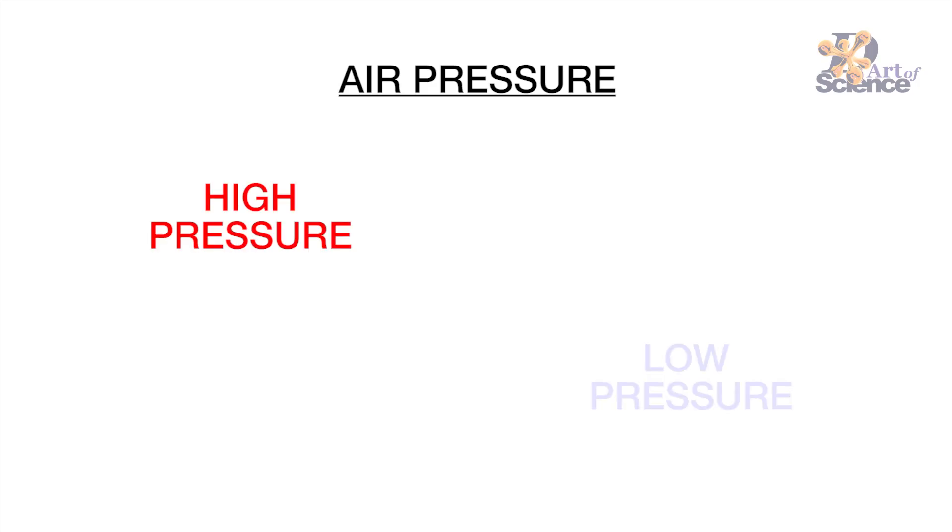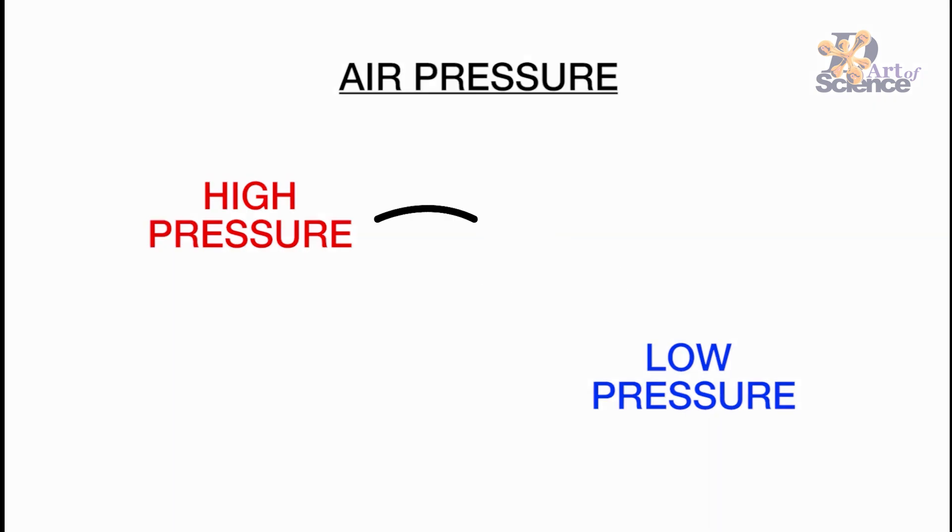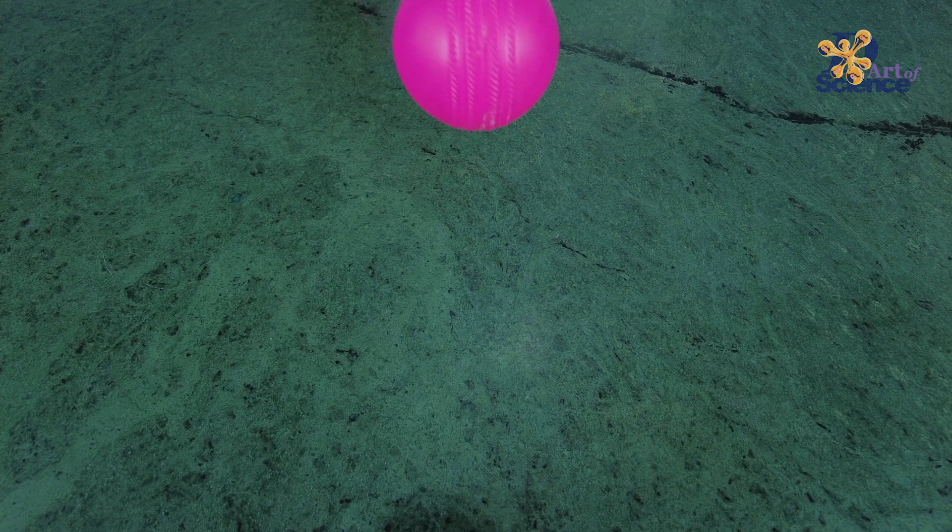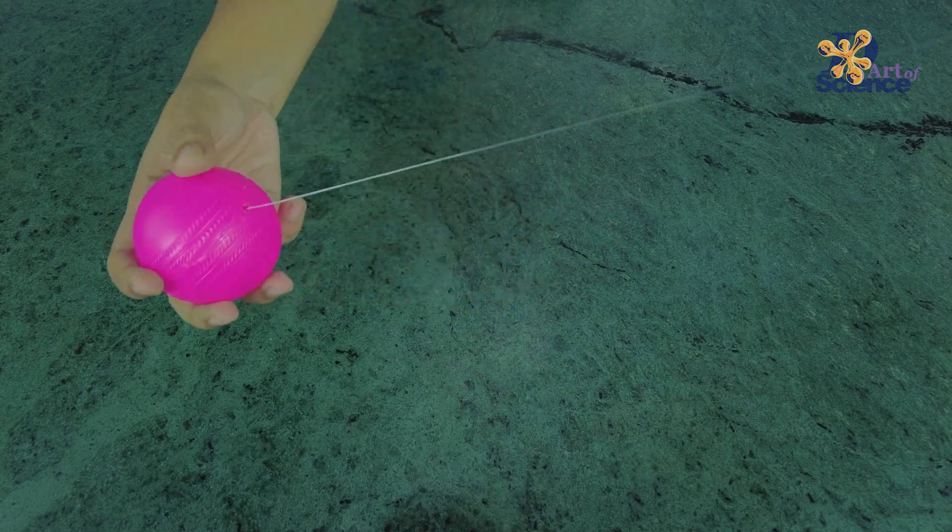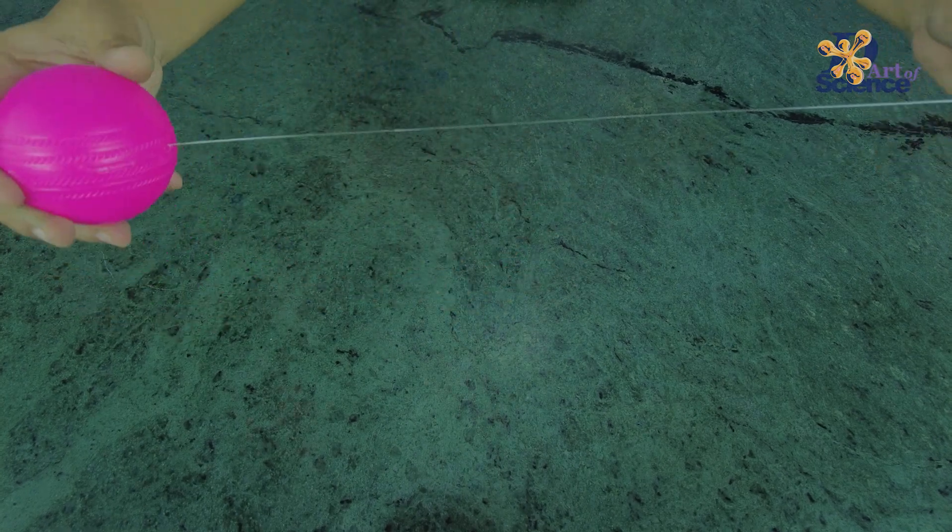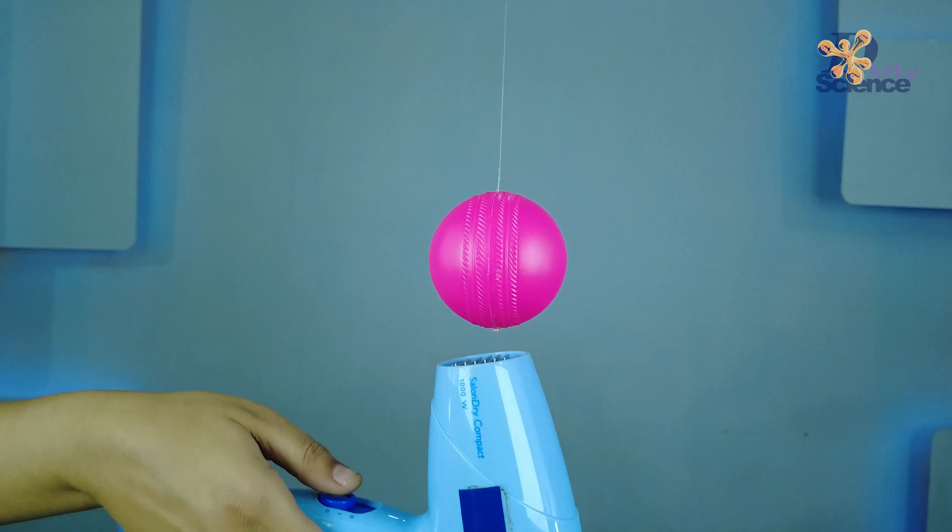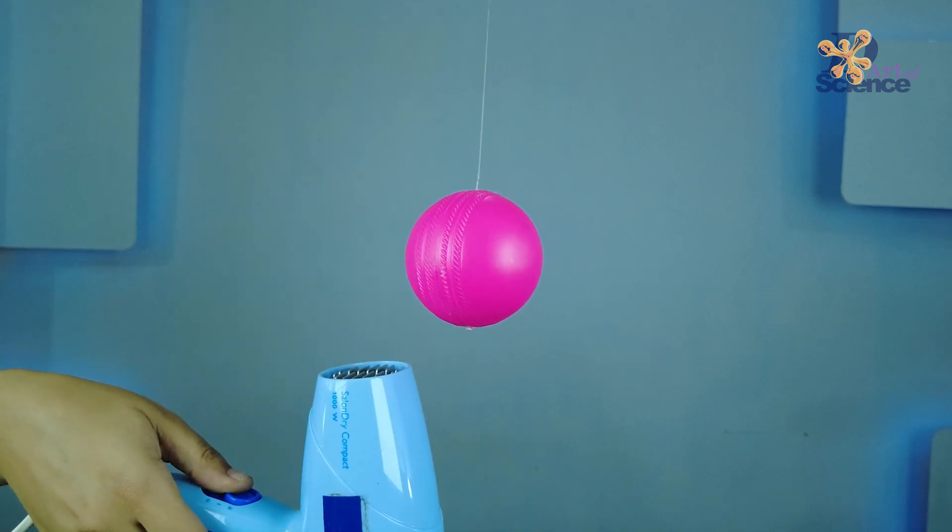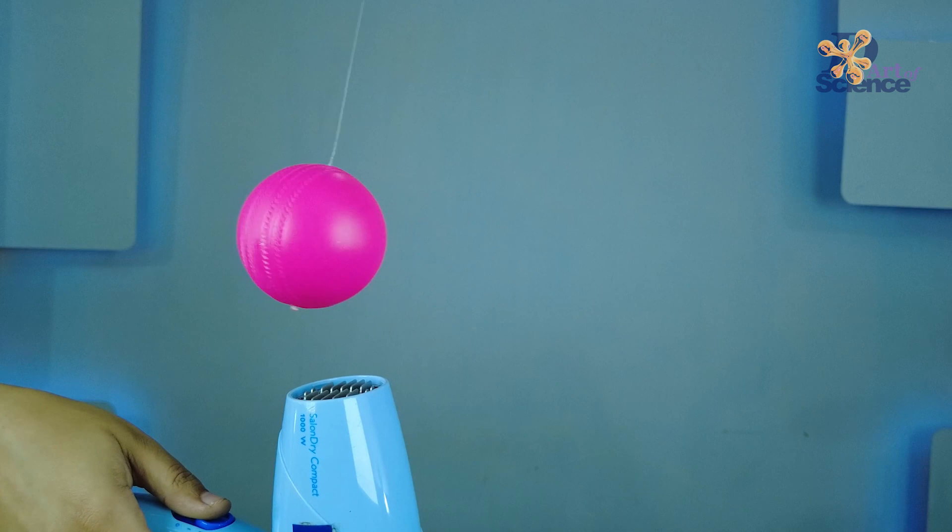Well, here's where air pressure comes into play. Air always travels from high pressure areas to low pressure areas. Here's a way to show that. Simply tie a thread to a ball and let it suspend from a height. Now take the hair dryer and blow air not under the ball, but beside the ball.